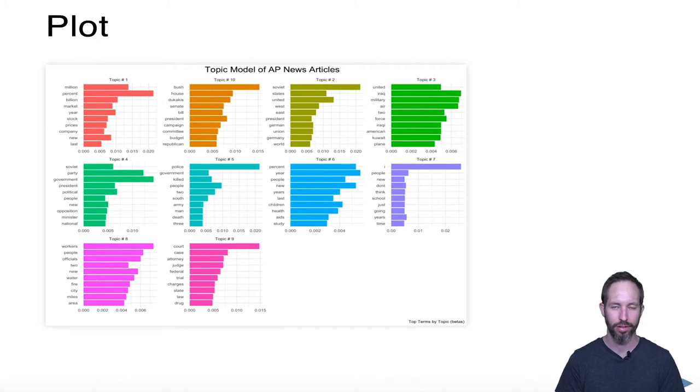If you check these out closely, you'll see there's one that's kind of about the economy and another that's kind of about the Soviet union. But then there's another one that just literally seems like random words. That's not uncommon in a first run through a topic model. Typically, we've either underestimated the number of topics or overestimated the number of topics.